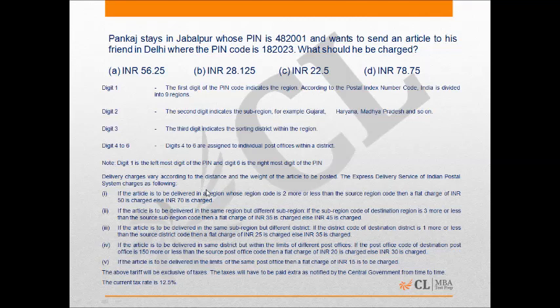Digit 2, which is the second digit, indicates the sub-region. Digit 3 indicates the district. Digits 4 to 6 would be individual post offices within the district.